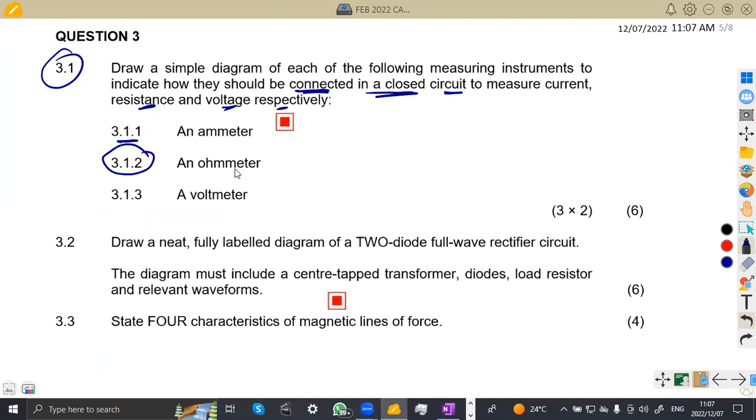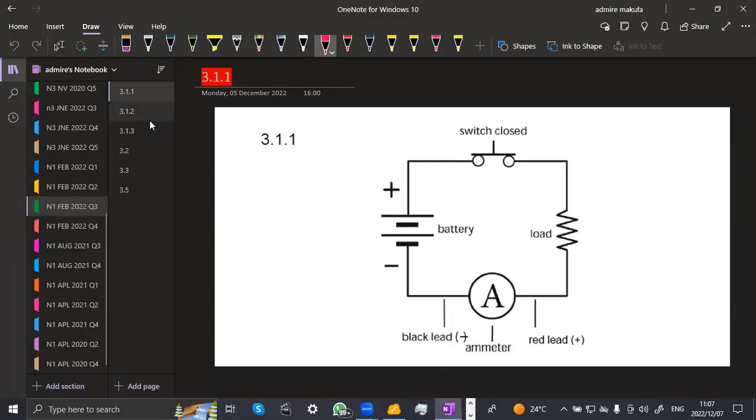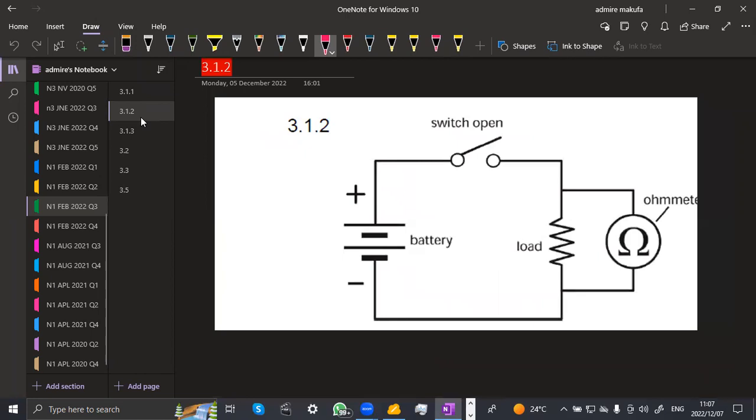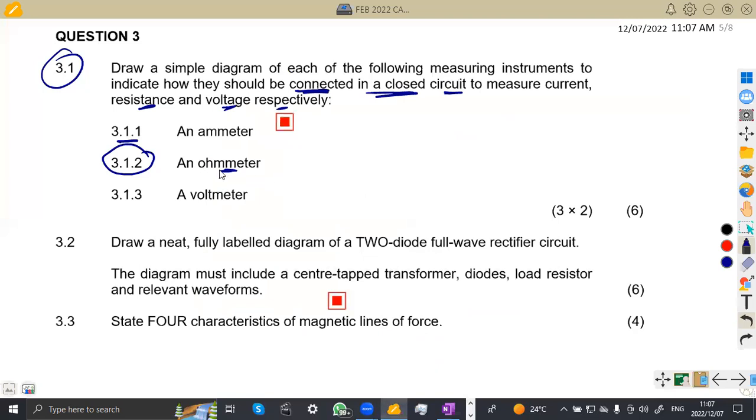3.1.2, an ohmmeter. How is it connected? It's supposed to be in a parallel combination, but this should be open. So that's what you're going to have. An ohmmeter and the load. They should be like this in parallel, the battery, and the switch for that moment is going to be open.